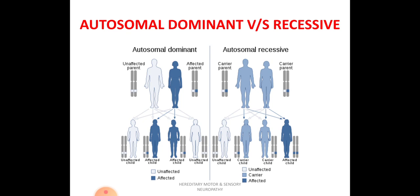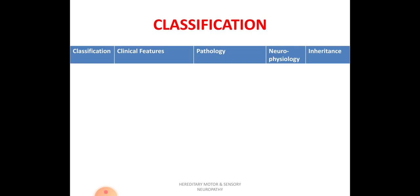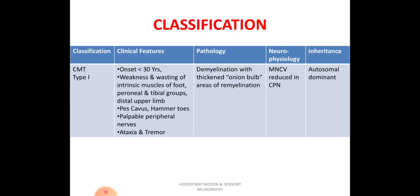Type 1 HMSN starts before the age of 30 years. There will be weakness and wasting of intrinsic muscles of the foot, as well as peroneal and tibial groups. It also extends to the upper limb, including distal muscles like interossei and lumbricals. Deformities such as pes cavus or hammer toes will also be present, and peripheral nerves will be thickened and palpable. The patient may also suffer from ataxia and tremor.